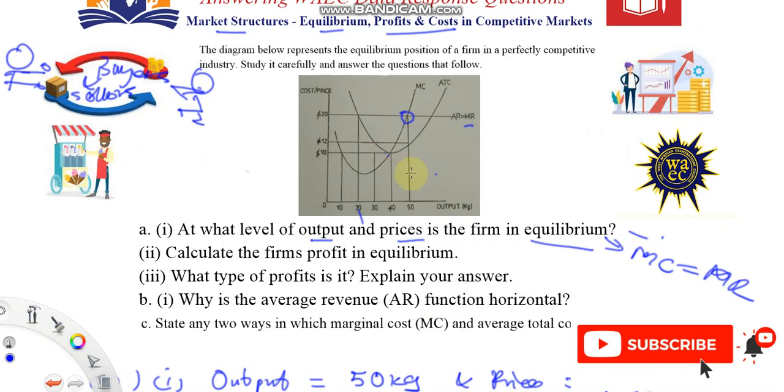Remember that it costs us $12 to produce this particular product, and then we were selling this product at $20. But actually, we could have actually sold this product less than $20 and still made enough profit. So this profit we're making here, this region represents the abnormal profit we're making. So in this case, these profits are called abnormal profits.